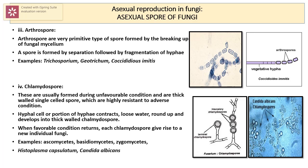When hyphal fragmentation occurs, the resulting spores are termed arthrospores. If the cells are surrounded by a thick wall before hyphal fragmentation, the spores are instead called chlamydospores. If spores are not produced in a sac but do develop at a hyphal tip or side wall, they are called conidiospores. These differences relate to their formation, structure, and reproduction strategy.